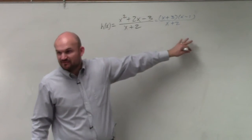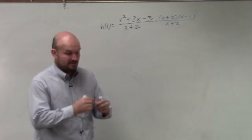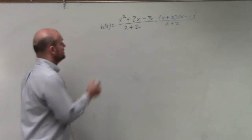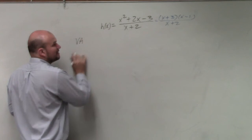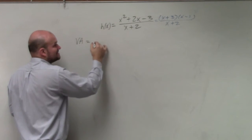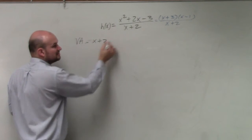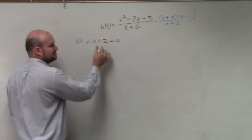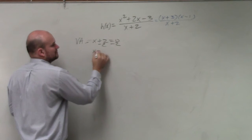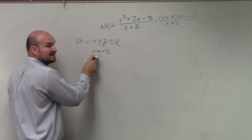OK, but does anything simplify out? No, so we're good. There's no holes. So my vertical asymptote is simply setting my denominator equal to 0 and then solving. So I have a vertical asymptote at x equals negative 2.